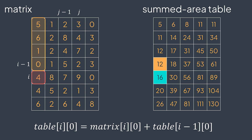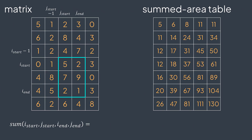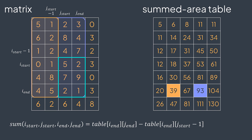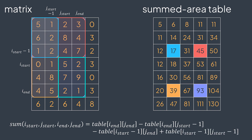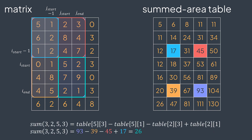Once the table is filled, we can get the sum of elements of any sub-matrix in O(1). For the sum of elements from (i_start, j_start) to (i_end, j_end), we take table[i_end][j_end], subtract table[i_end][j_start-1], subtract table[i_start-1][j_end], and add back table[i_start-1][j_start-1]. For example, the sum of the sub-rectangle from (3,2) to (5,3): table[5][3] - table[5][1] - table[2][3] + table[2][1] = 93 - 39 - 45 + 17 = 26, which matches the direct sum 5+2+7+9+2+1 = 26.